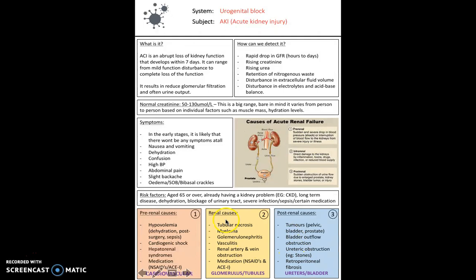For renal causes, you can generally sum these up as glomerulus or tubule problems - for example, tubular necrosis, myeloma, glomerular nephritis, vasculitis, and renal artery and vein obstructions. Medications crop up again. It's really important to be aware of NSAIDs and ACE inhibitors because they have a real impact on patients developing AKI.